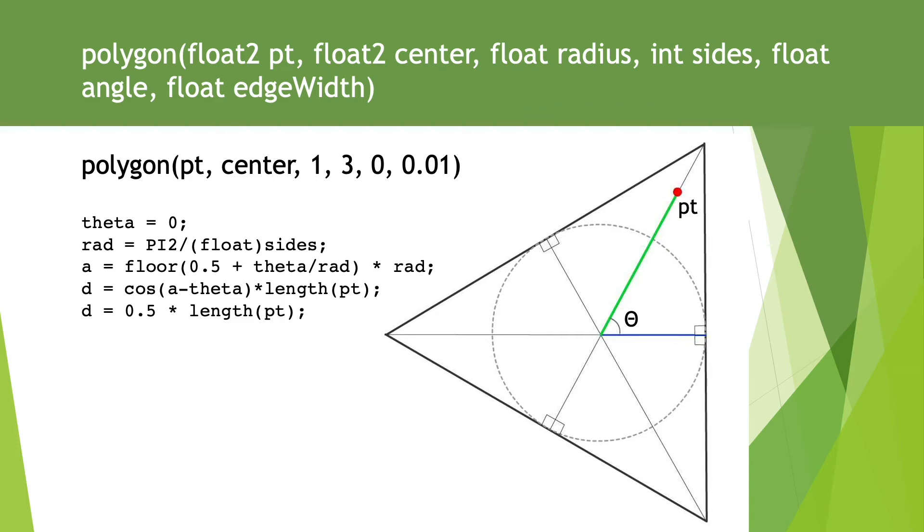So as the pixel gets nearer to the corner of the polygon, the value of d will be modulated as much as halved. Keep this in mind. In this final line, we test if the value d is within the radius.